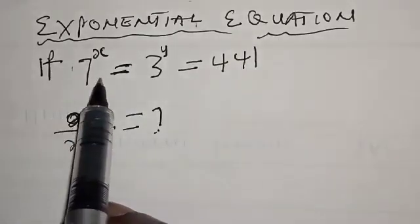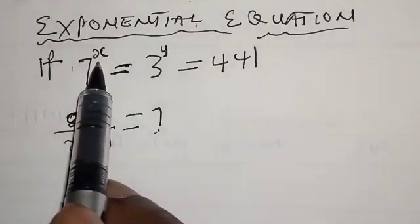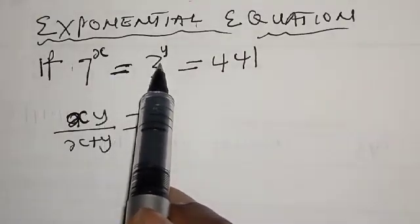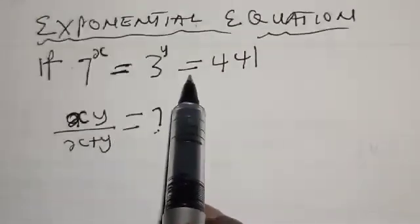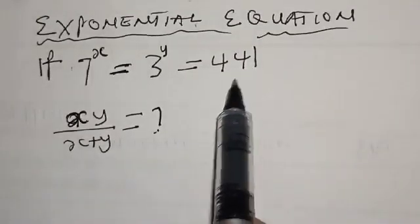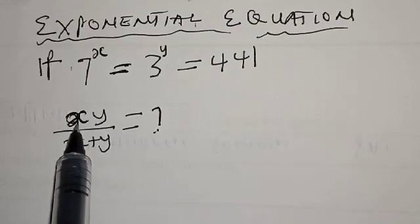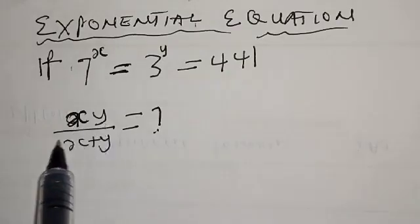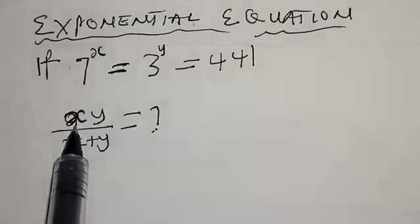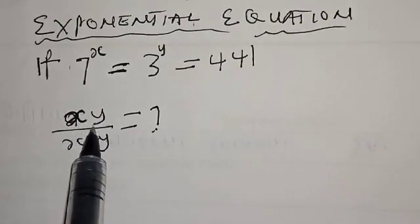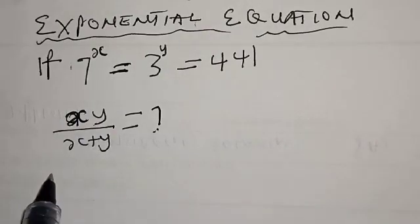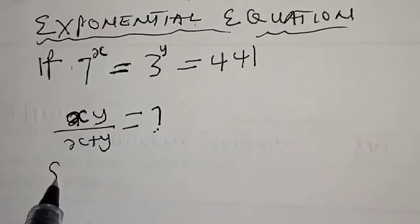Exponential equation: if 7 raised to power x is equal to 3 raised to power y is equal to 441, then xy over x plus y is equal to what? We are asked to find the value of xy over x plus y. Solution.